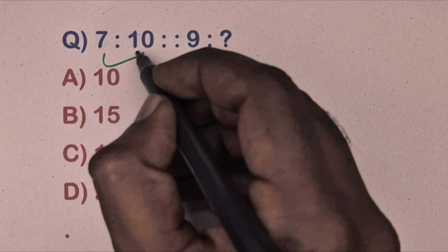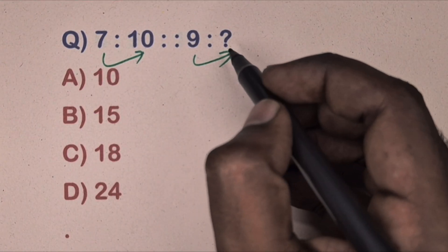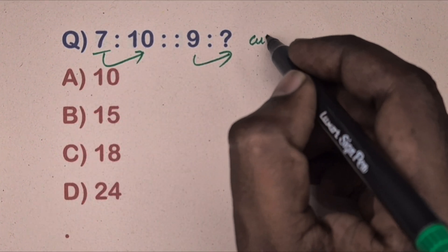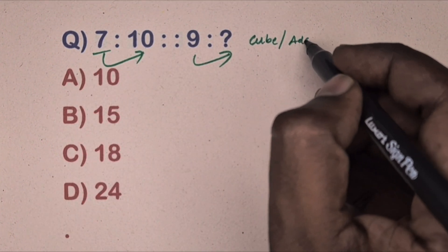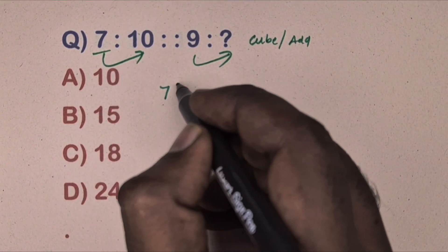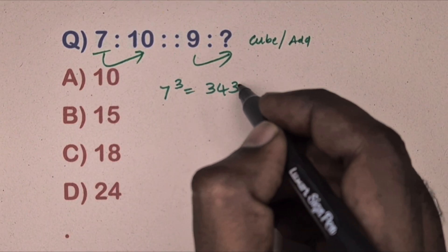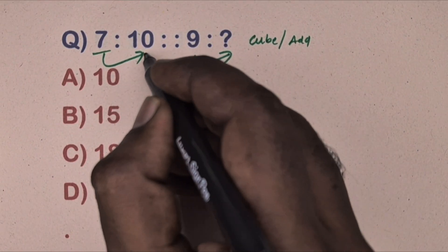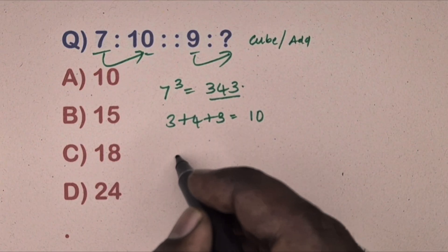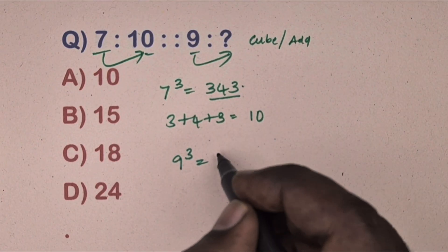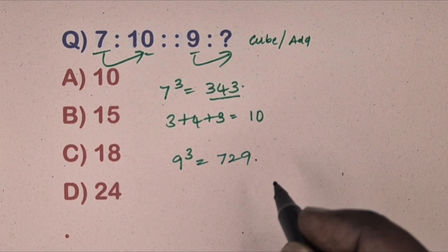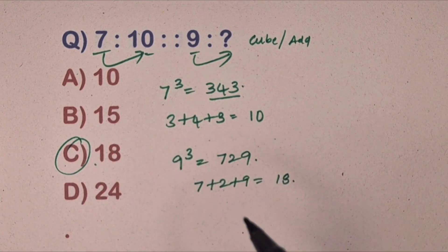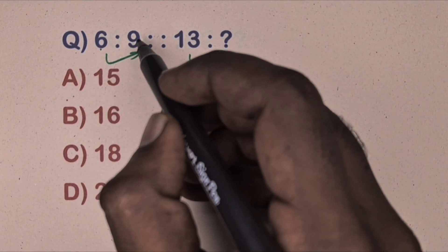Next question: seven is related to ten, nine is related to which number. This is cube and addition relation. Take seven, seven cubed equals 343, add the digits to get ten — and ten is there. Same way take nine, nine cubed equals 729, add the digits to get 18. So 18 is the correct answer.